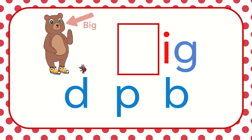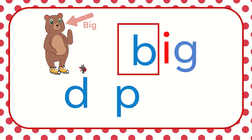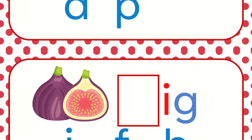What letter do I need to turn the -ig into big? Do I need the D, the P, or the B? You're right — it is the B. The word is big. Good job.